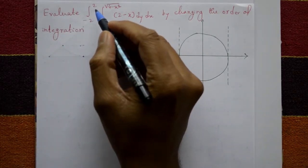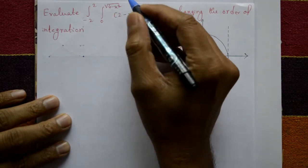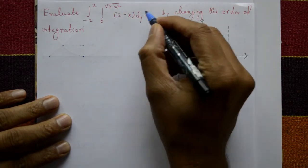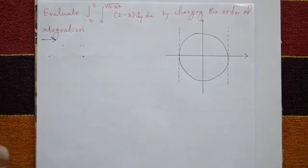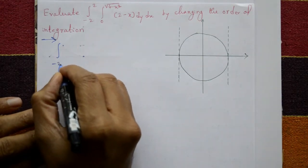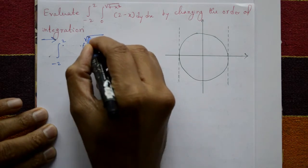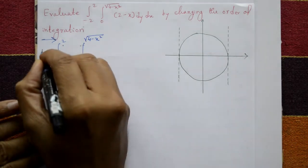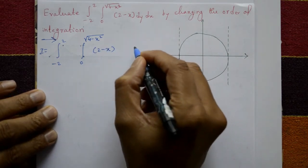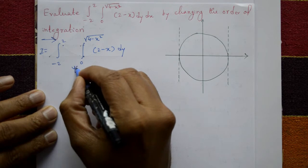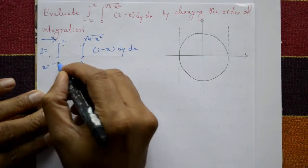Evaluate the integral of minus 2 to plus 2, integration of 0 to square root of 4 minus x squared, of the function 2 minus x, with respect to dy dx, by changing the order of integration. Now the solution: I is equal to integration from minus 2 to plus 2, integration from 0 to square root of 4 minus x squared, of 2 minus x, dy dx.